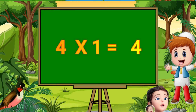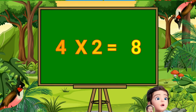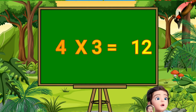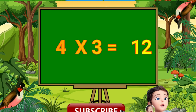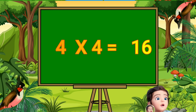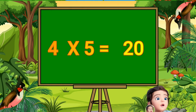Table of four. Four ones are four. Four twos are eight. Four threes are twelve. Four fours are sixteen. Four fives are twenty.